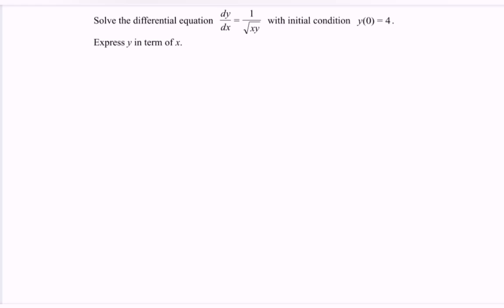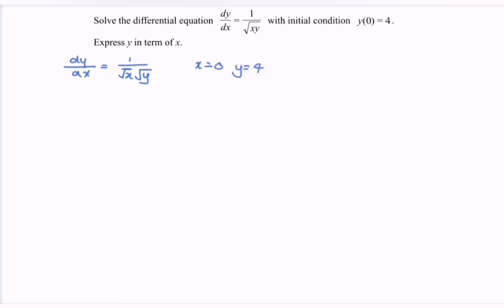So here we have dy/dx equals 1 over the square root of x multiplied with the square root of y, and the initial conditions x equals 0 and y equals 4.